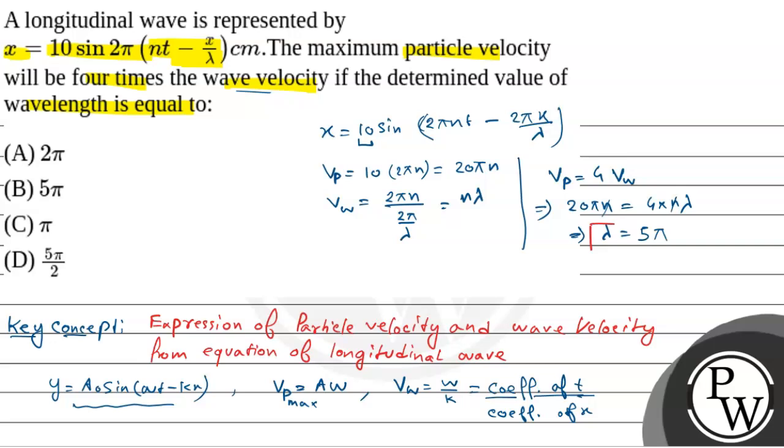That means our wavelength value will be 5π. So our option B is our correct answer. That is 5π is the value of the wavelength. Hope you understand it. Let's continue.